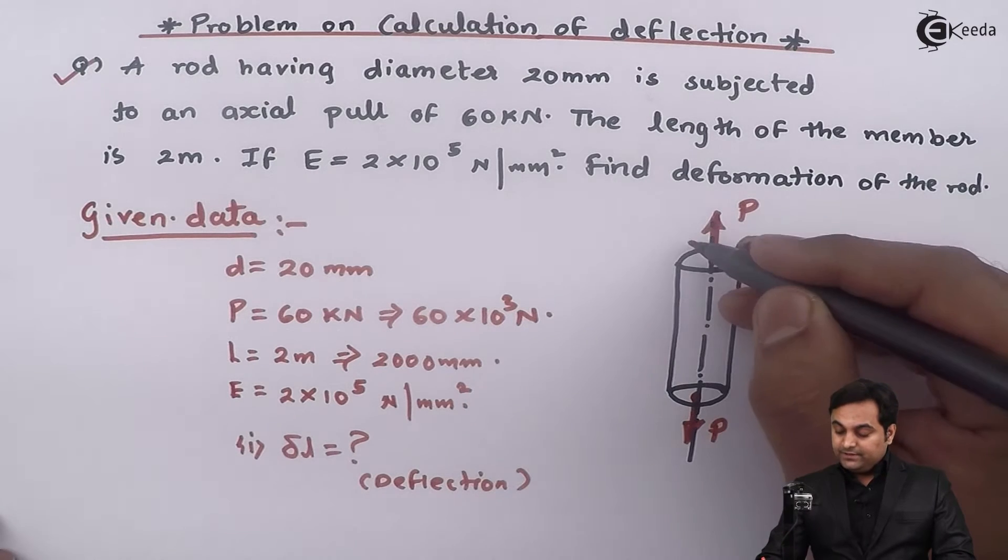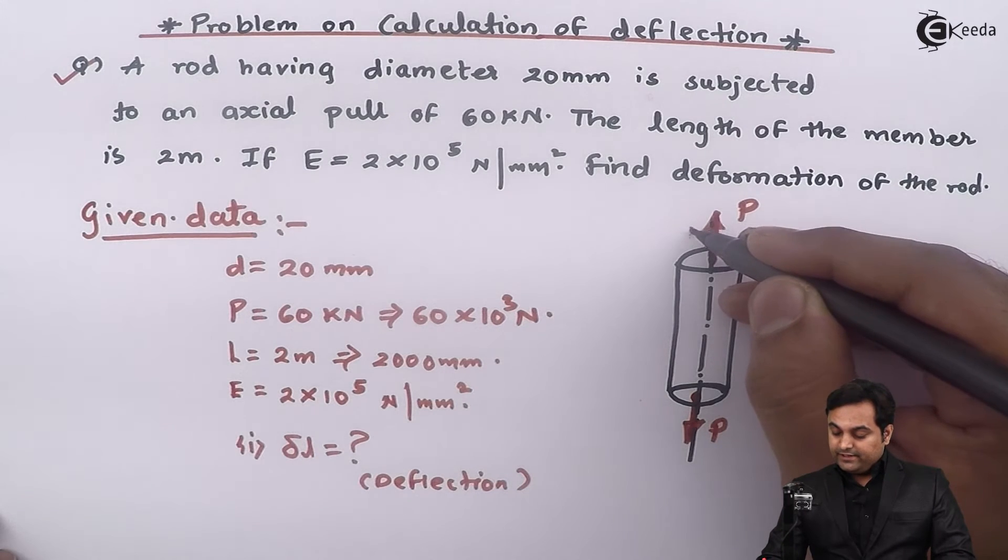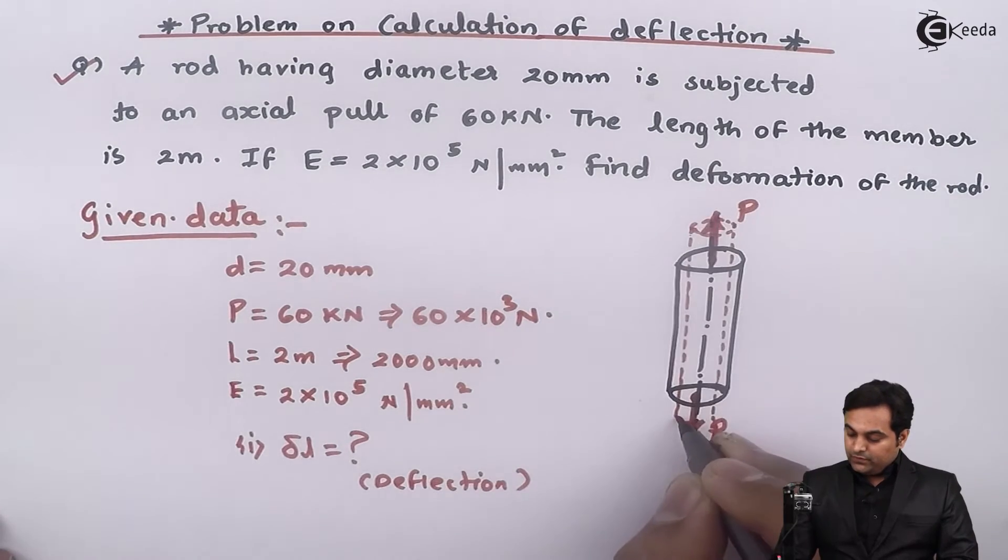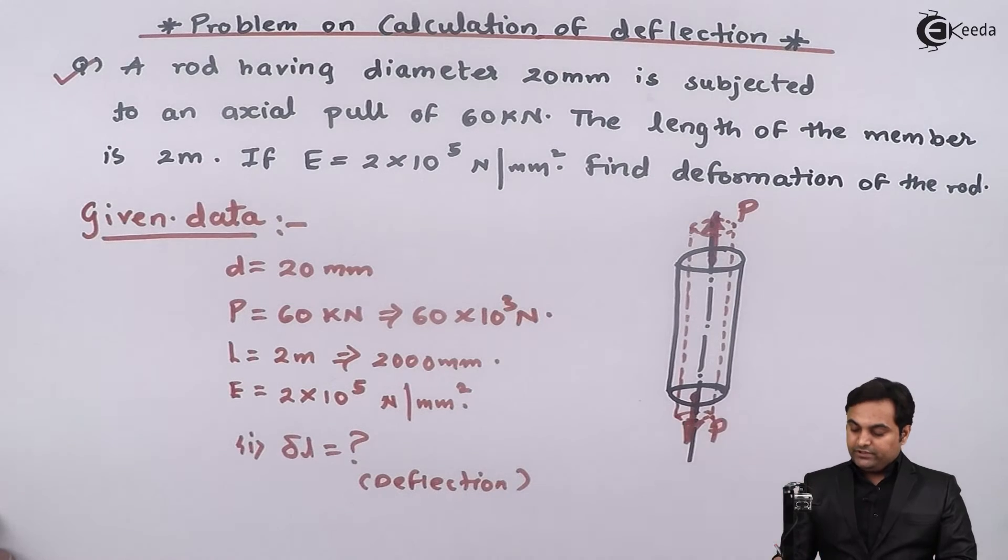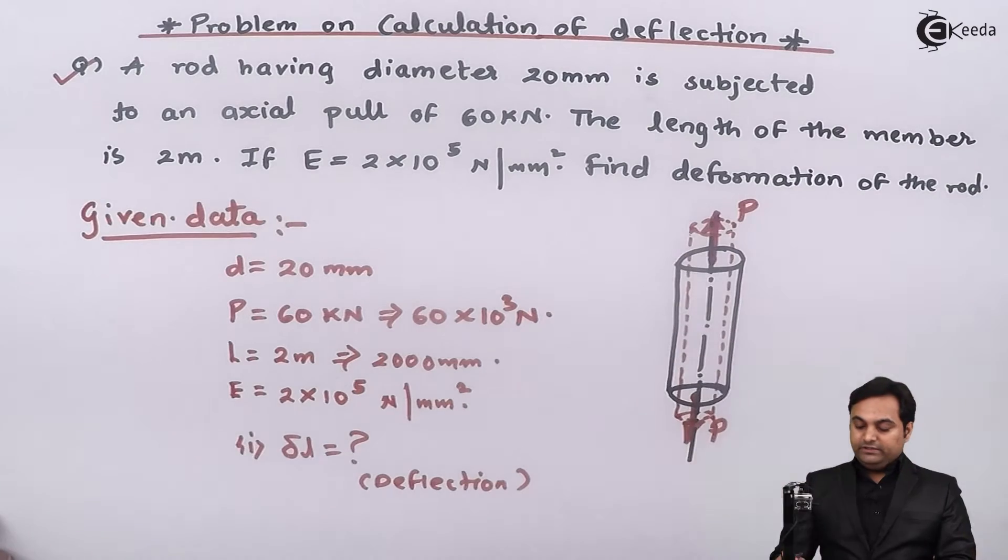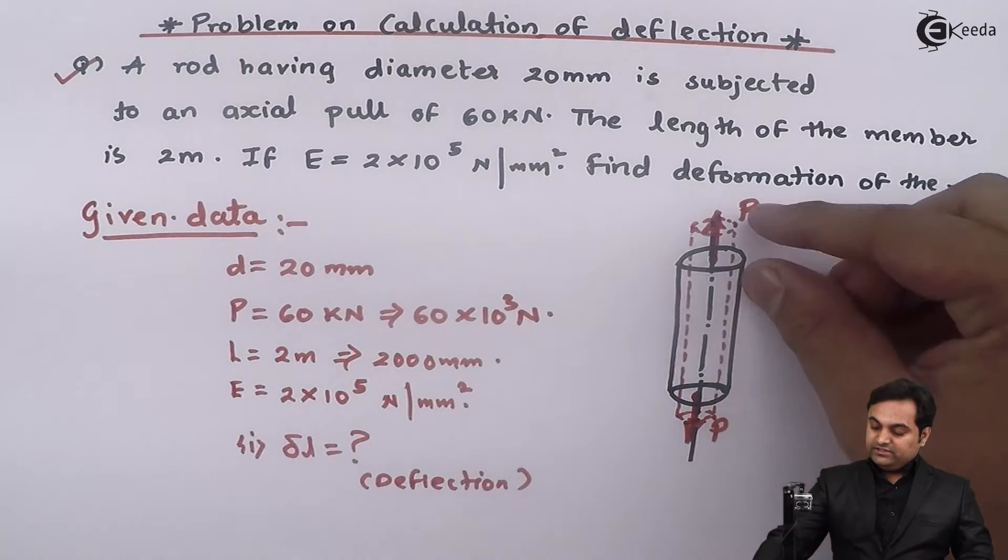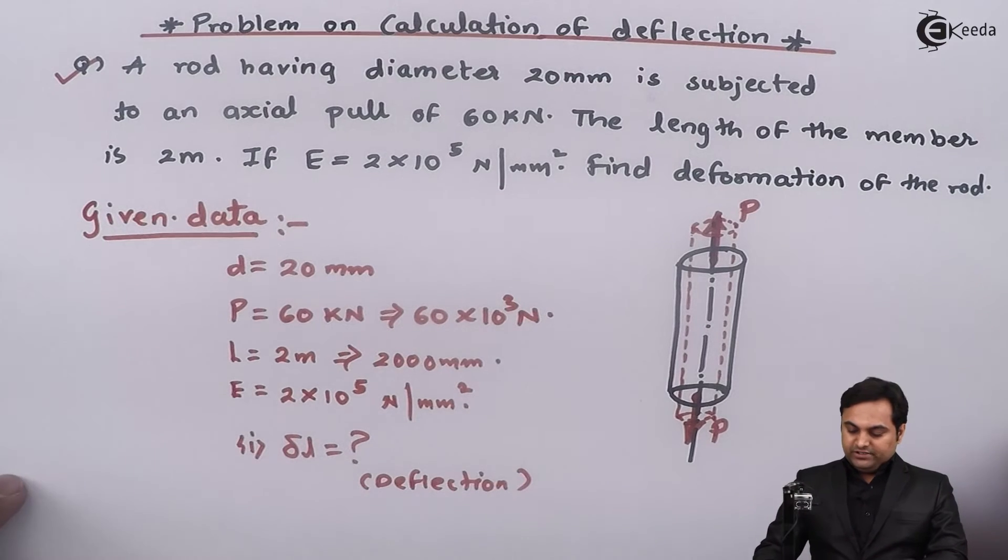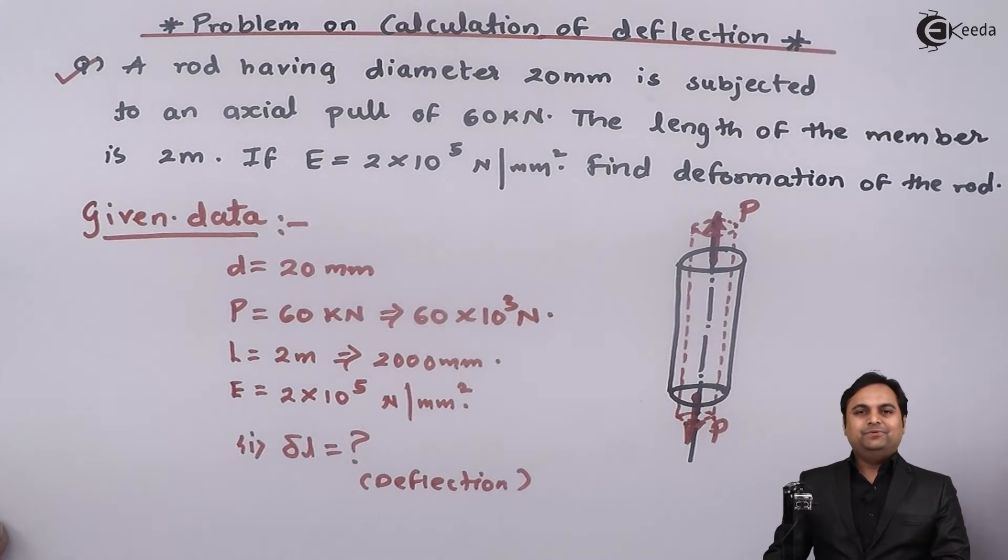Next, when this rod is pulled, then the length of the rod will go on increasing and diameter will go on decreasing. So here if I draw the diagram, it will look like this when it is elongated. That is, length increases and the diameter will go on decreasing. So this deflection, that is the change in length of the rod, is what we have to calculate. So let us try to get the solution for this problem.